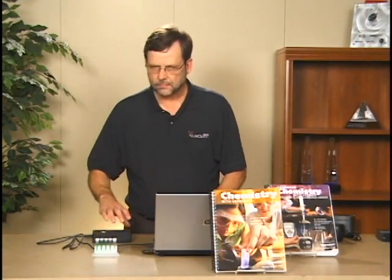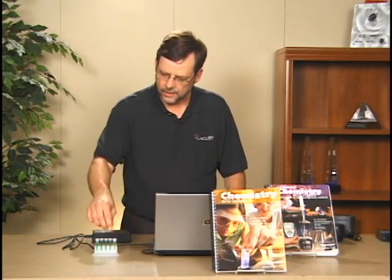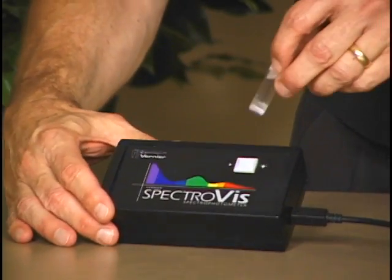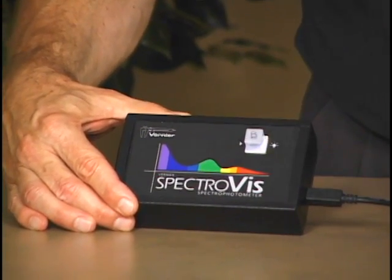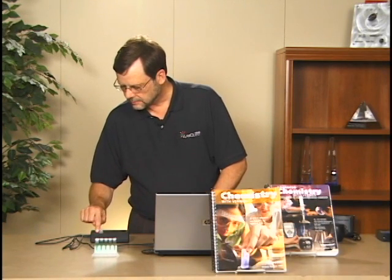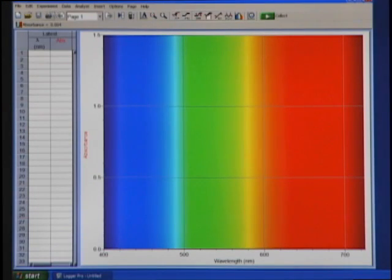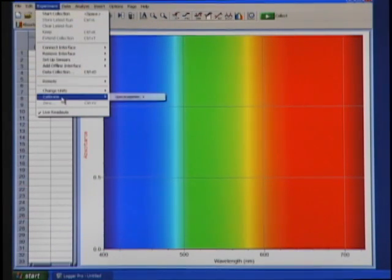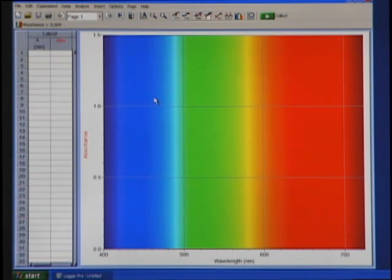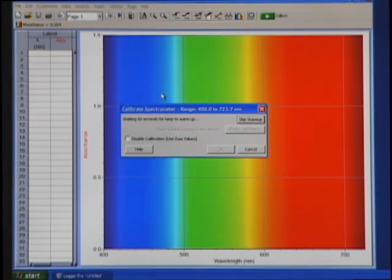So my first step here, as with most spectrophotometers, is I want to do a calibration. I'm going to take a blank cuvette and place it into the cuvette slot of the spectrometer. The lamp is over on this side of the cuvette slot, and the detector array is over on this side, and so I've aligned that correctly. Now I go into Logger Pro, and I'm going to choose from the Experiment menu, Calibrate Spectrometer. In the dialog, it says that it's going to wait 60 seconds for the lamp to warm up. Now we're just about done. The warm-up is just about complete.